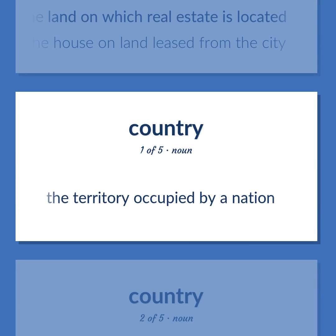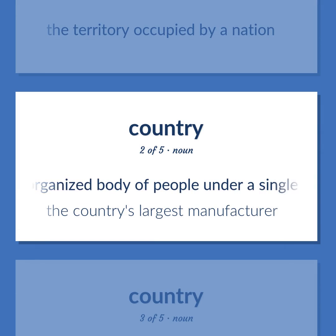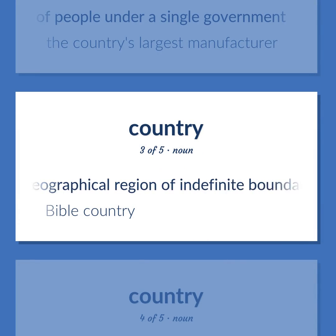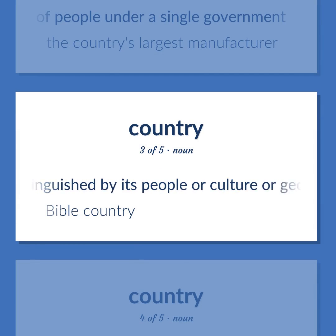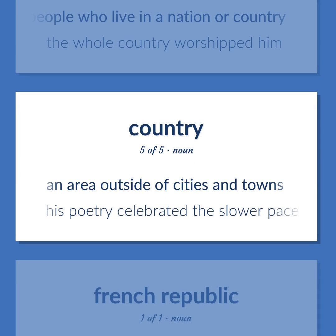Country: the territory occupied by a nation. A politically organized body of people under a single government — the country's largest manufacturer. A particular geographical region of indefinite boundary, usually serving some special purpose or distinguished by its people or culture or geography — Bible country. The people who live in a nation or country — the whole country worshipped him. An area outside of cities and towns — his poetry celebrated the slower pace of life in the country.